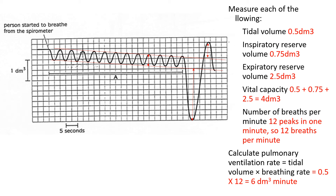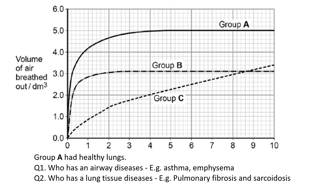The pulmonary ventilation rate is the tidal volume multiplied by the breathing rate. Using the graph you can work out that the breathing rate is 12 per minute and the tidal volume is 0.5 dm³, so 0.5 times 12 gives you 6 dm³ per minute — that's the amount of gas being breathed in and out per minute.